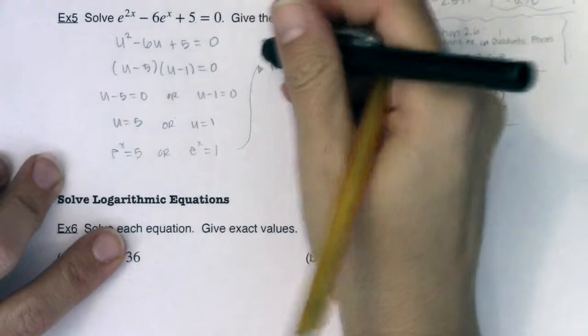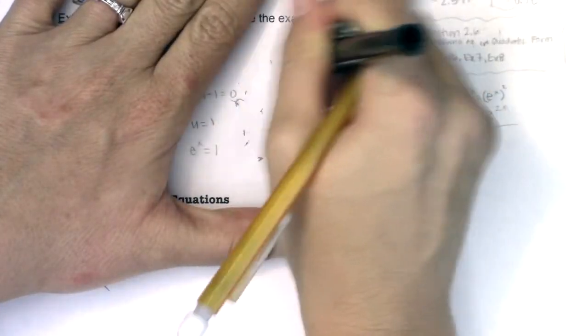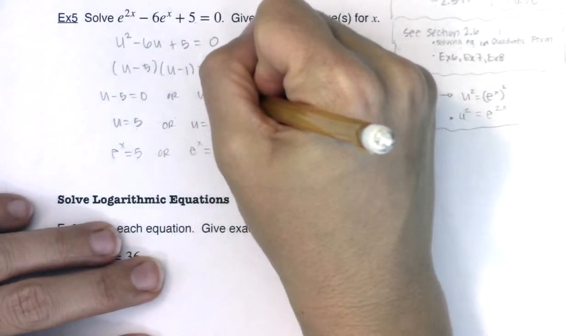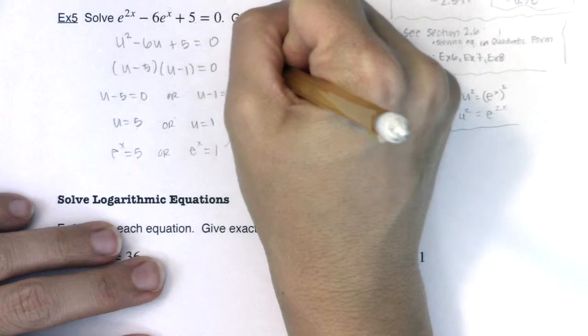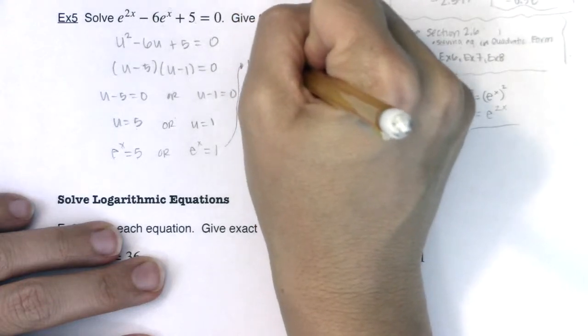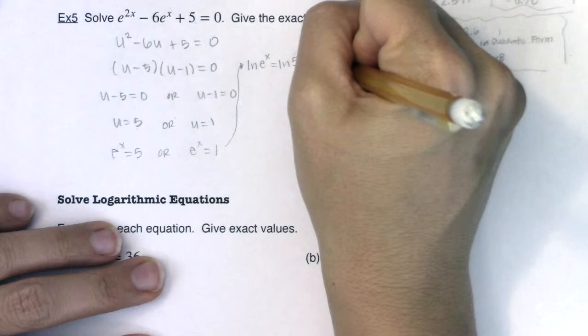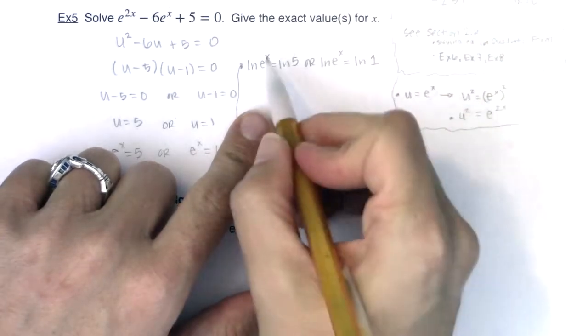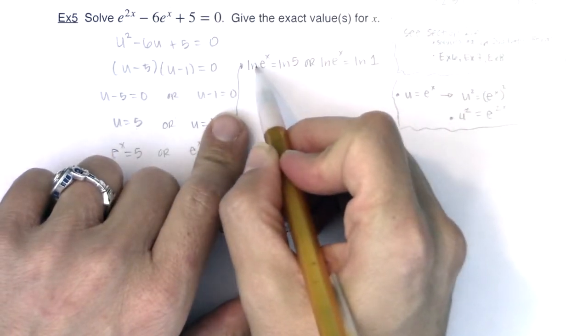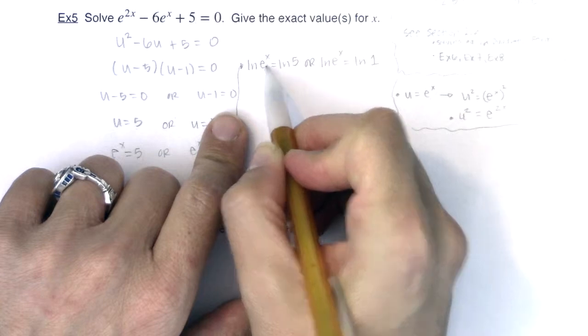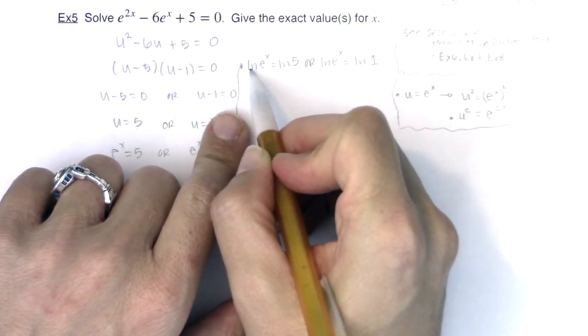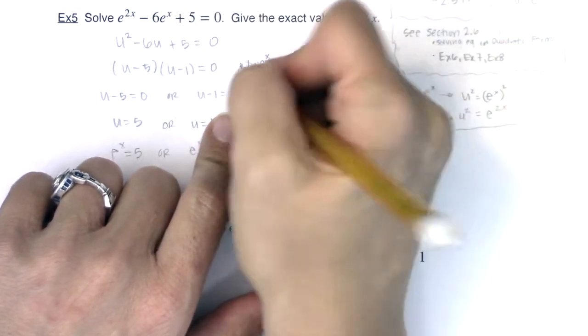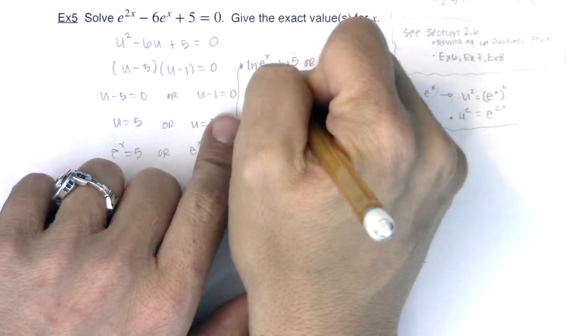Let me rewrite this so I just have enough space. So I'll have ln of e to the x is equal to ln 5, or I know that ln of e to the x is equal to the natural log of 1. We talked about this in example 4. When you have an ln and you have an e, when the base of your logarithm, because this is log base e, and the base of your power are the same, the only thing that survives is the exponent.